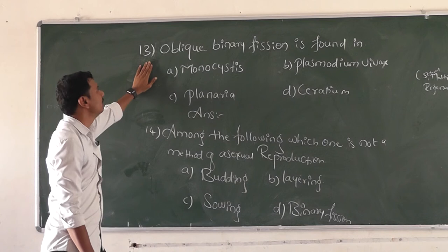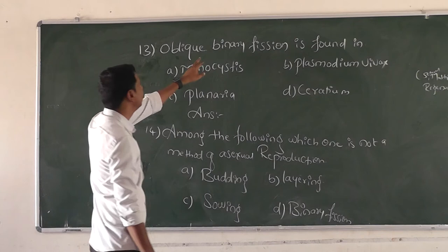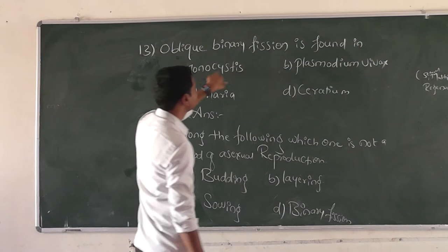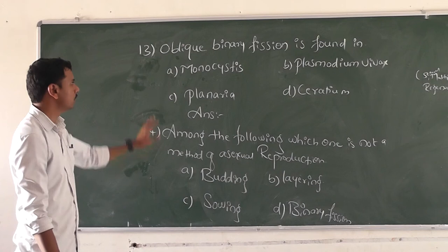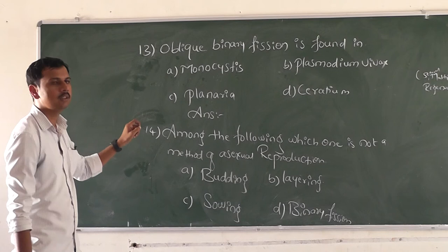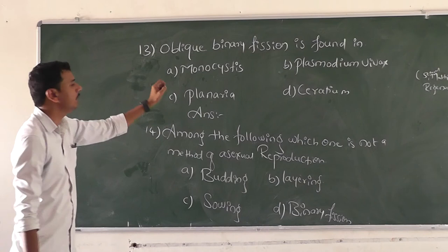We will discuss the question about oblique binary fission. The options are: option A monocystis, option B Plasmodium vivax, option C planaria, and option D Ceratium. The right answer for question number 13 is Ceratium.